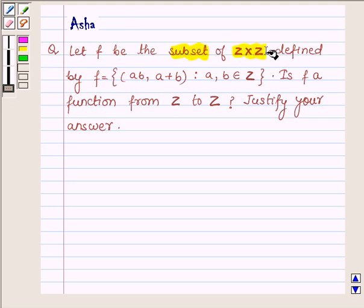subset of Z cross Z defined by f equals the set of ordered pairs (ab, a+b) such that a and b are elements of Z. Is f a function from Z to Z? Justify your answer.